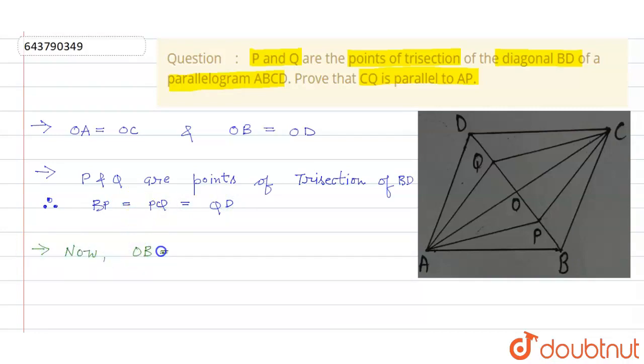Now, OB is equals to OD and BP is equals to QD. OB minus BP is equals to OD minus QD and what remains is OP is equals to OQ.